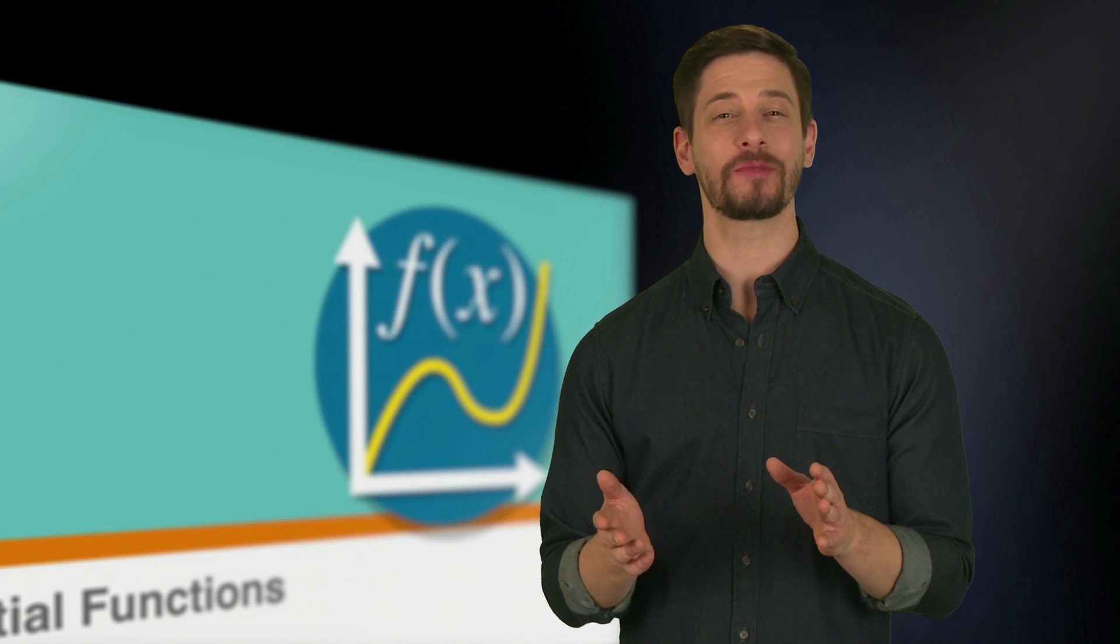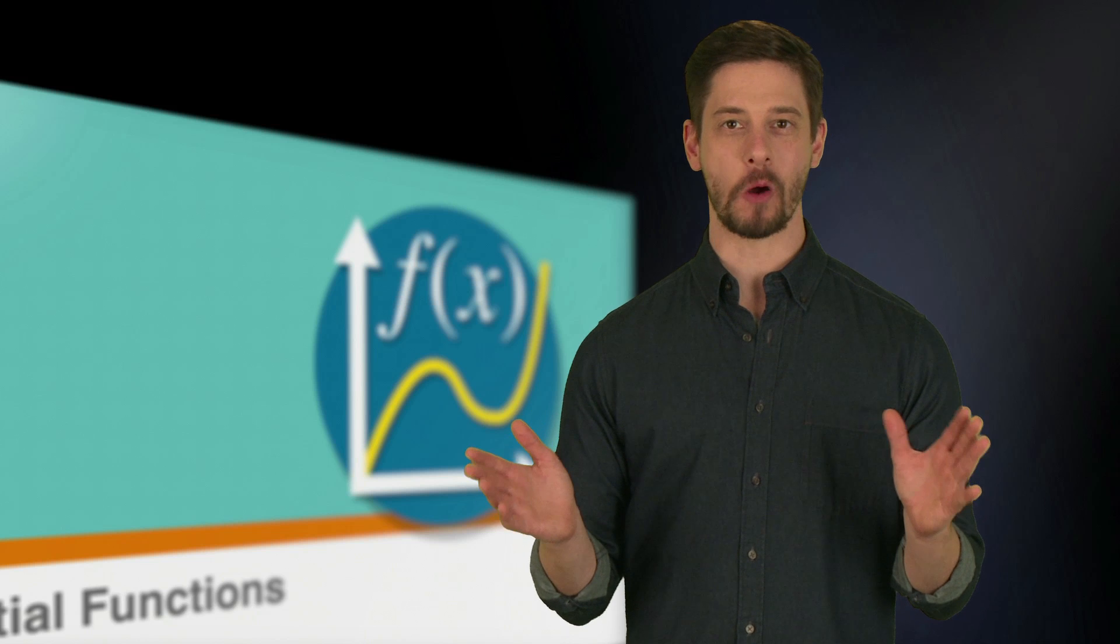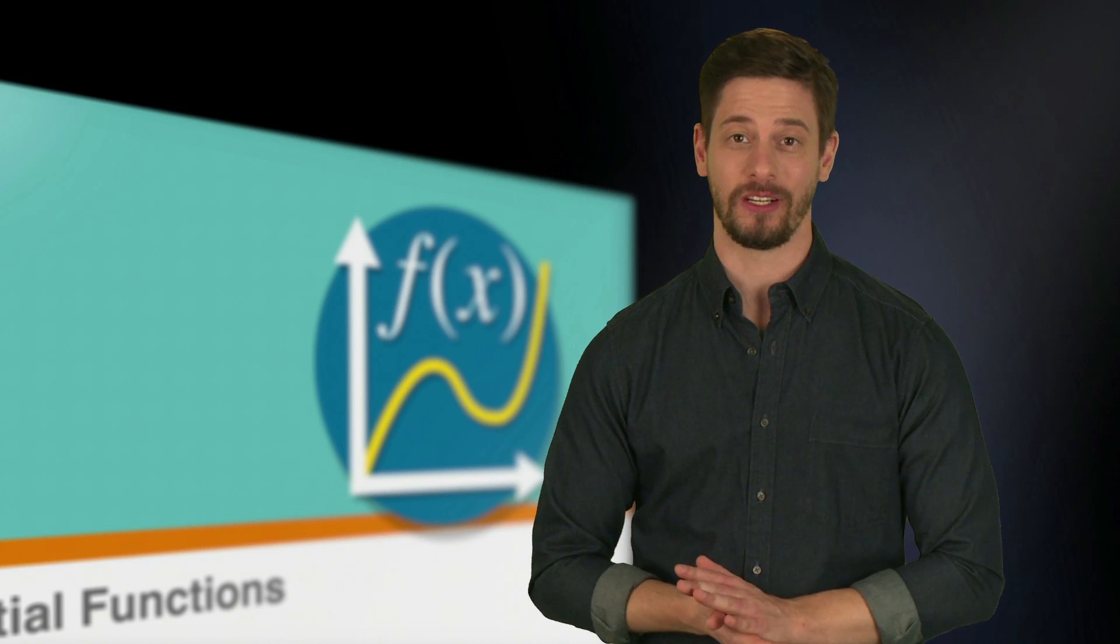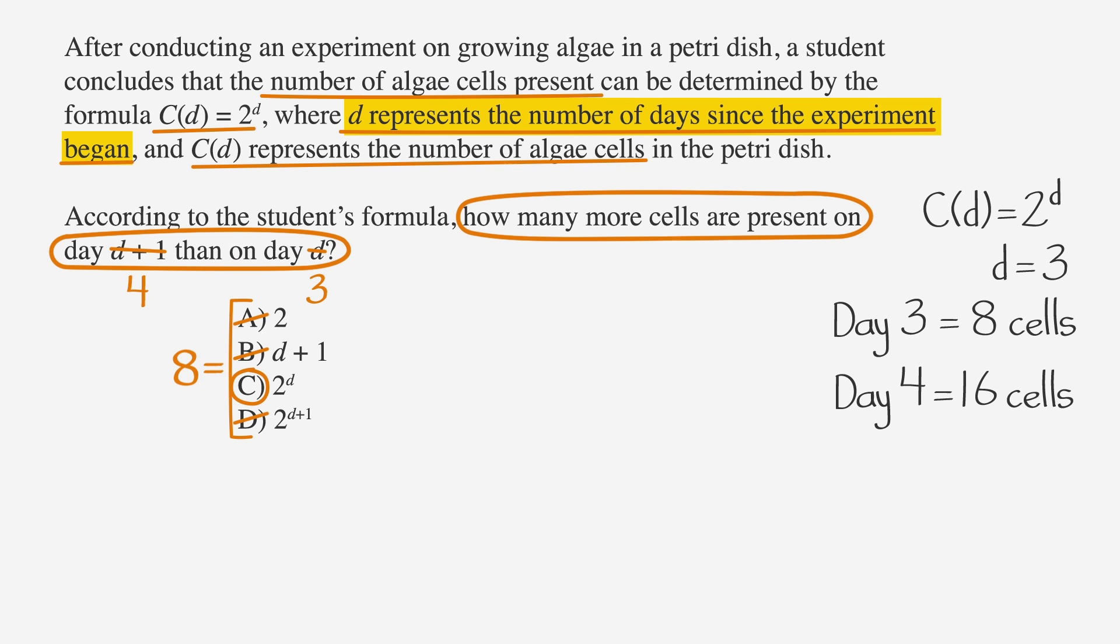Not bad. But now, let's put your knowledge to the test. Second round bonus question. How many algae cells were present when the experiment began? To answer this one, we need to go back to the question. We know that d represents the number of days since the experiment began. And if d = 1, then one day has passed since the experiment began. If we want to know how many cells were present when the experiment began, we need to go back to a time when 0 days had passed, which means d = 0. Now let's plug 0 into our formula and see how many algae cells were present at the start of the experiment. So C(0) = 2^0, and 2^0 = 1. Remember, anything to the 0 equals 1. So there was one cell present when the experiment began. Good work.